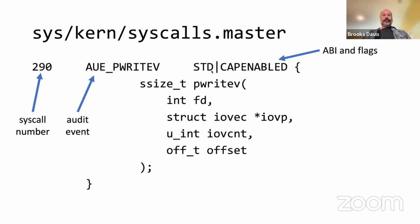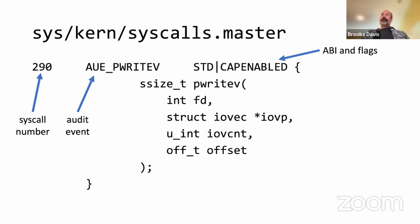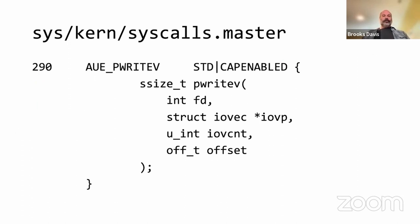'CAP_ENABLED' means you can call it when you're in capability mode — i.e., when you've entered Capsicum. For pwritev that's fine because the things you want to access are accessible by file descriptor. That's a decision you need to make about your API when declaring it.